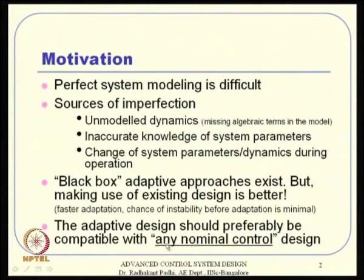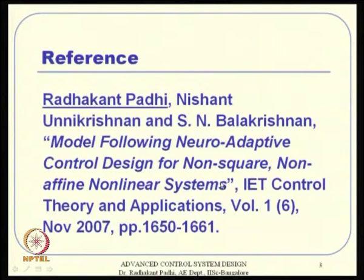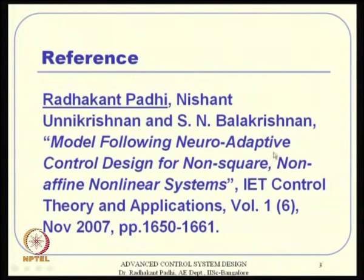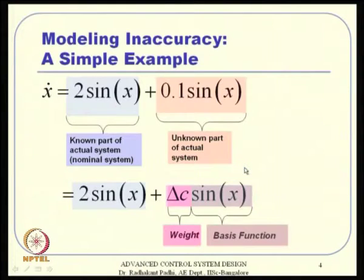This is largely from our own research team and was reported in the IET Control Theory and Applications journal in 2007. I will take you through an earlier version and towards the end of the lecture I will tell you what actually exists in that paper. The simple example we are concerned with is largely modeling inaccuracy, and one of the big reasons can be parameter inaccuracy.